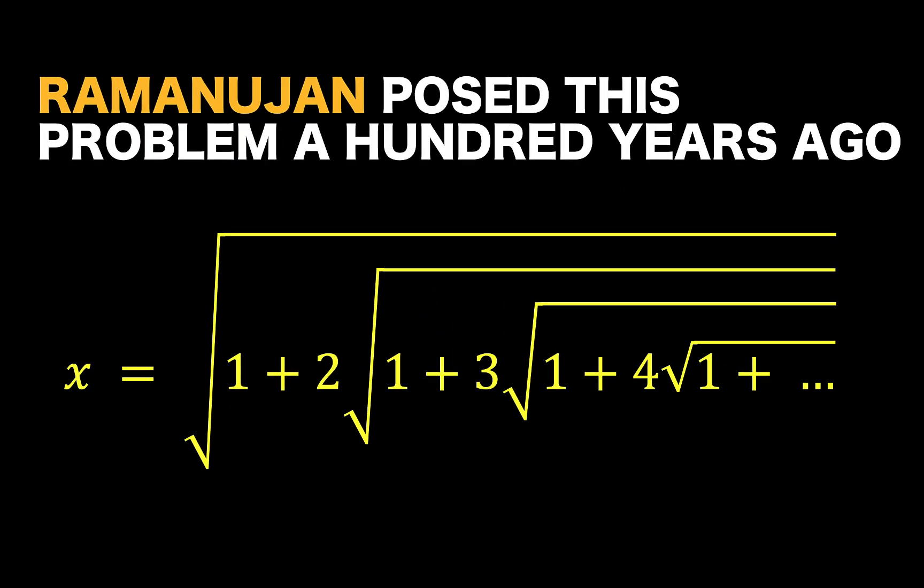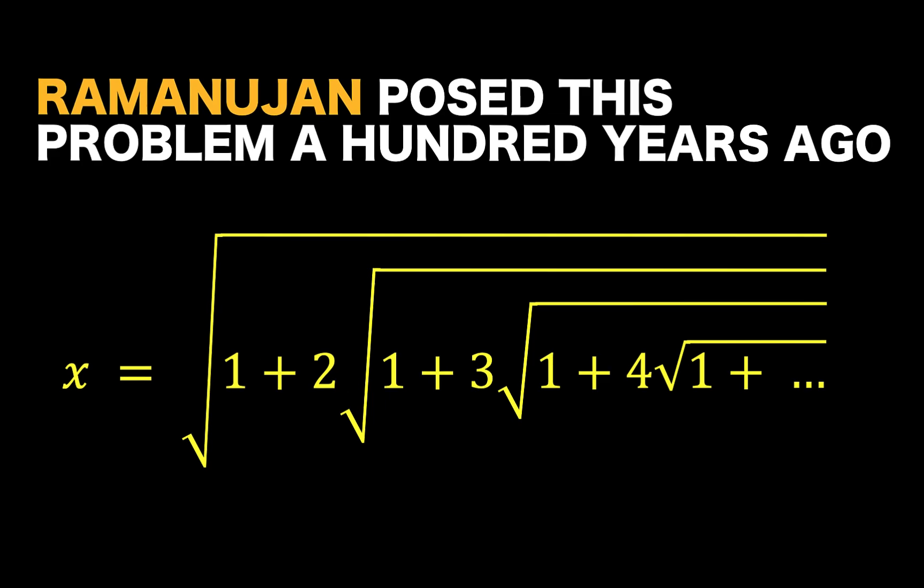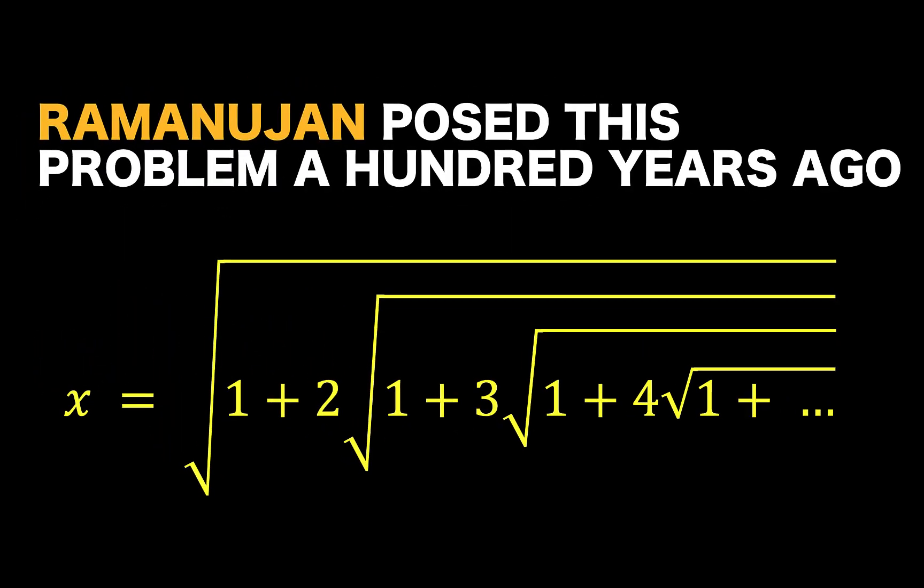Hi guys, Land the Assistant here, and let's take a look at this Ramanujan's problem he posed more than 100 years ago. Let's say we are given this problem. Find the value of x, where x is equal to the square root of 1 plus 2 times the square root of 1 plus 3 times the square root of 1 plus 4 times the square root of 1 plus, and then continue the pattern.